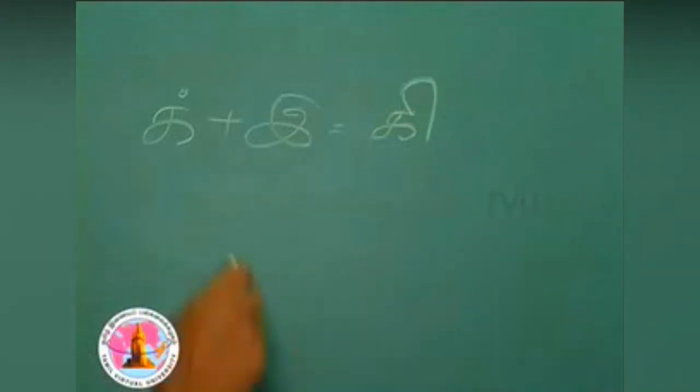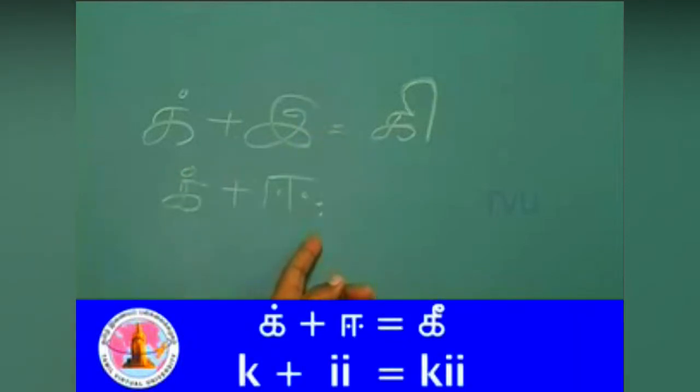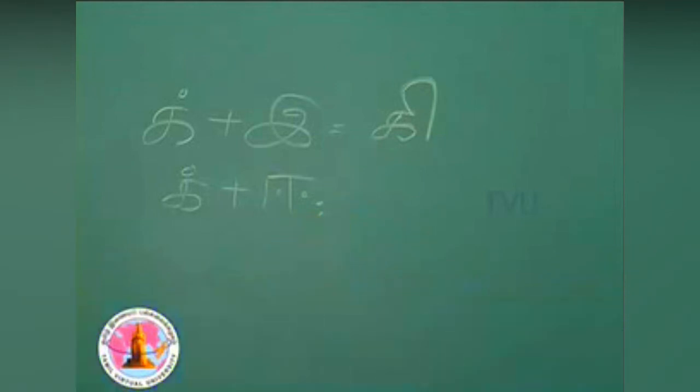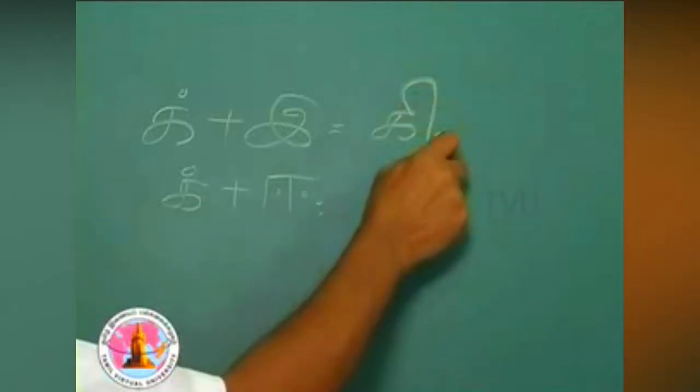Now, we go to the next vowel, that is ee. iq plus ee, key. This is short key and this is key, the long one. The same symbol is to be cut in the middle and then rounded off. The same hook will be cut in the middle and rounded off.